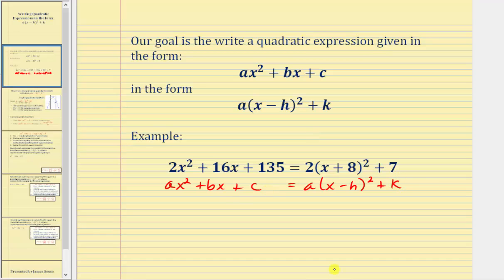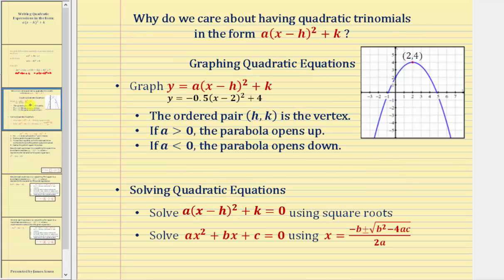So just to verify these are equal, you may want to multiply this out. Also notice how here we have the binomial X plus eight, which means in this form, H would be negative eight. Before we learn how to do this, let's talk about why this form is so important. It becomes very important once we have equations, rather than just expressions.